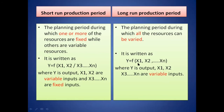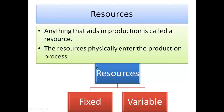In the long run — five years or ten years — everything can be changed: you can purchase more land or build another building. All resources are variable. The long run function is written as Y = f(X1, X2...Xn) where all inputs X1 through Xn are variable. In short run, resources before the bar are variable; resources after the bar are fixed. In long run, every resource is variable.